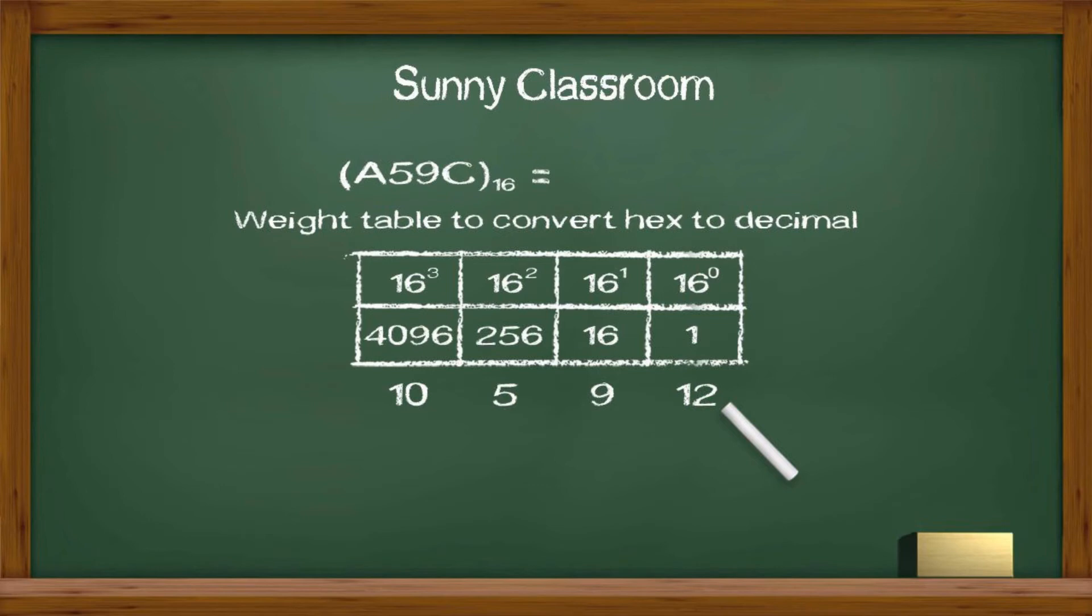Now let's do it. 10 times 16 to the third power and we get 40,960. 5 times 16 squared, we get 1,280.